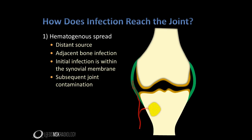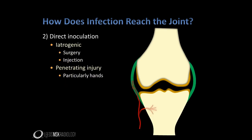Infection need not necessarily spread to a joint from a remote source. An infection in adjacent bone can spread via the blood to the synovium and then into the joint. In this case, of course, you won't see a communication between the site of bone infection and the joint. Besides hematogenous spread, infection can reach a joint through direct inoculation, either as a result of medical procedures or through other mechanisms of penetrating injury, including animal or indeed human bites.